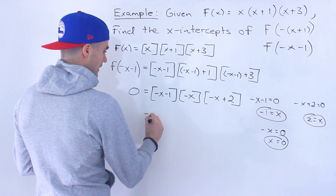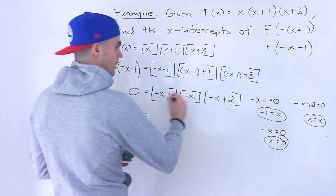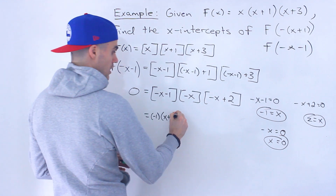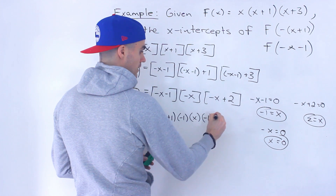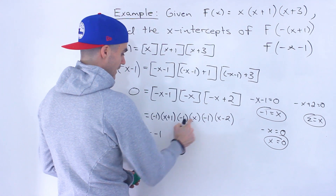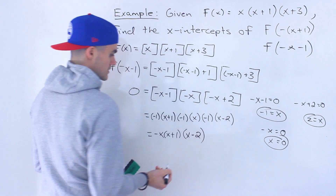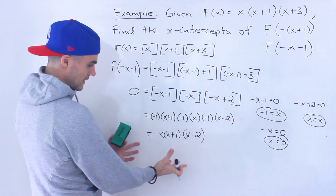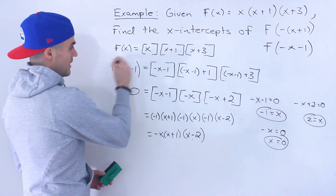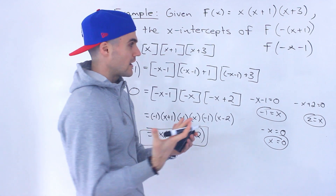That's one way to do it. If you want to simplify the function into a nicer format, you can factor out a negative 1 from each bracket to make all x values have positive leading coefficients. The first factor becomes x plus 1, the second becomes x, the third becomes x minus 2, and the three negative 1s multiply to give an overall negative 1 out front. This gives negative 1 times x times x plus 1 times x minus 2, confirming the same x-intercepts: 0, negative 1, and positive 2.